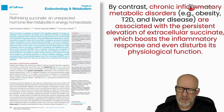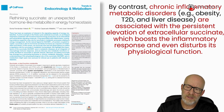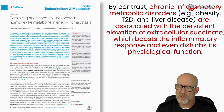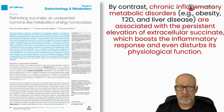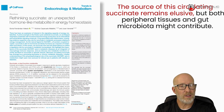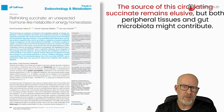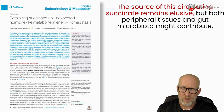By contrast, chronic inflammatory metabolic disorders such as obesity, type 2 diabetes, and liver disease are associated with a persistent elevation of extracellular succinate, which boosts the inflammatory response and even disturbs its physiological function. So this thing has activity — and that's a problem if we're trying to use it diagnostically for a mitochondrial issue or some kind of nutritional deficiency.